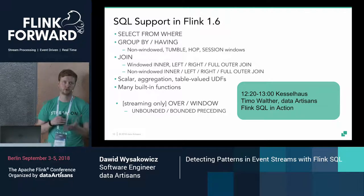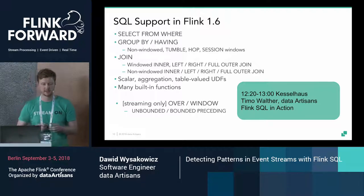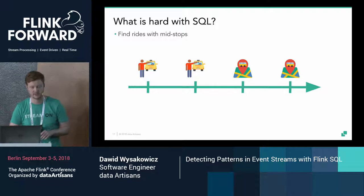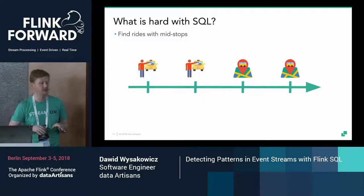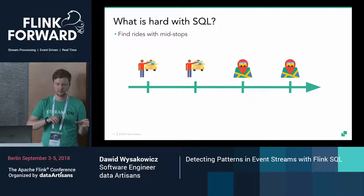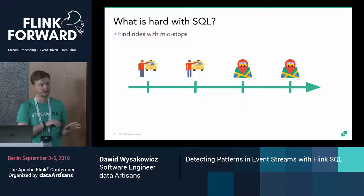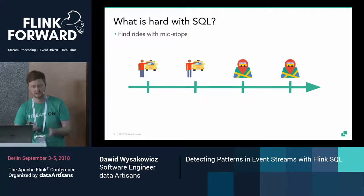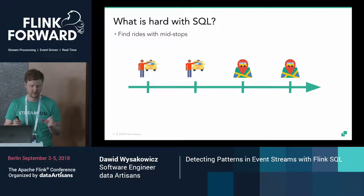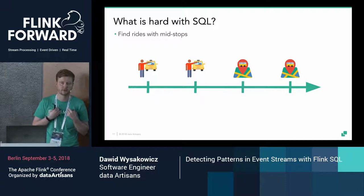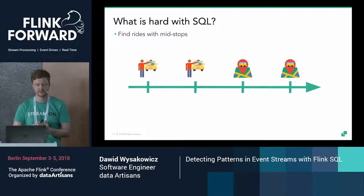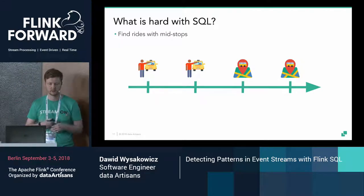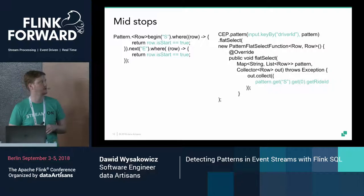Why is pattern detection a somewhat separate topic? With standard SQL, it's quite hard to solve some problems. For example, imagine we want to find rides with mid-stops — where between the start and end of a ride, another ride for the same taxi and driver started, meaning the driver started two rides at the same time. Somebody might be able to implement that with SQL, but it would be extremely simple to solve with the CEP library.